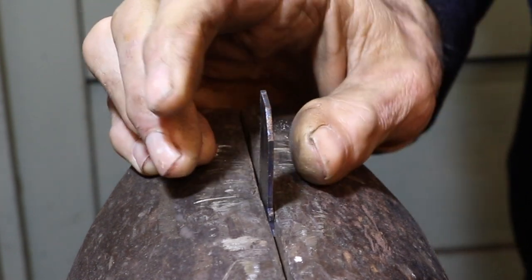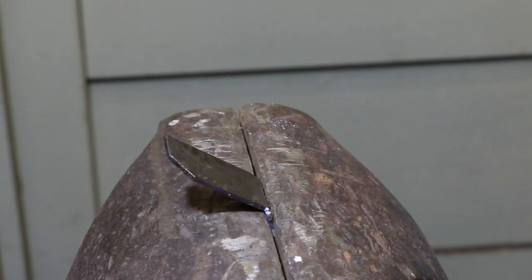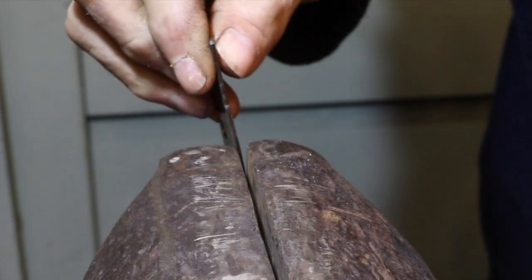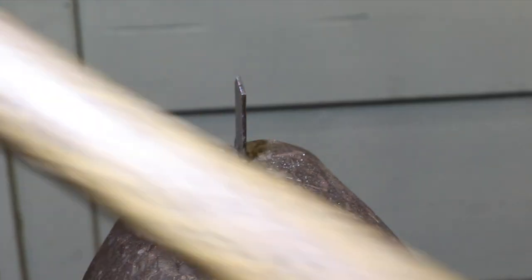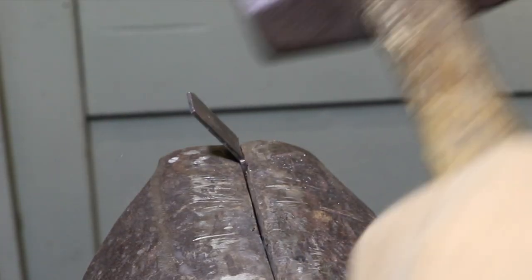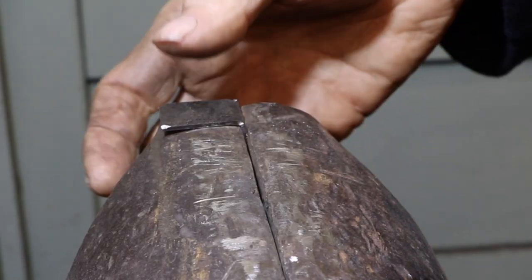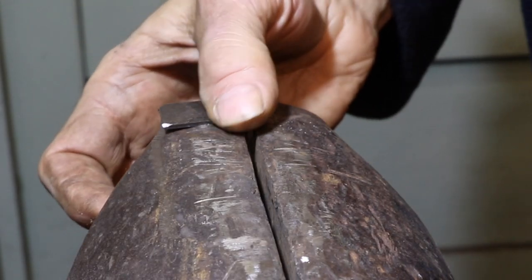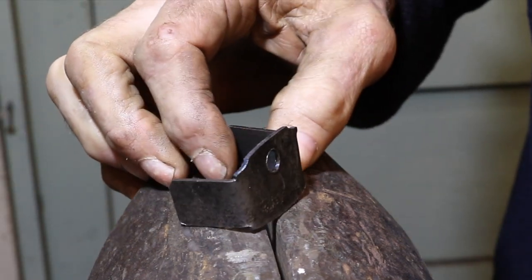The process starts by making the two bends that form the shape of the cover plate. These two bends are the only part of the process that I'm going to be able to do in the actual vise jaws.